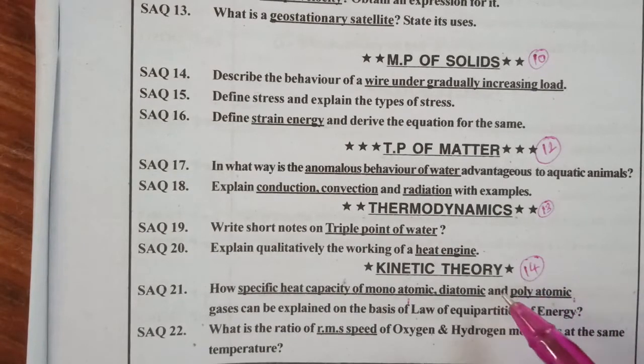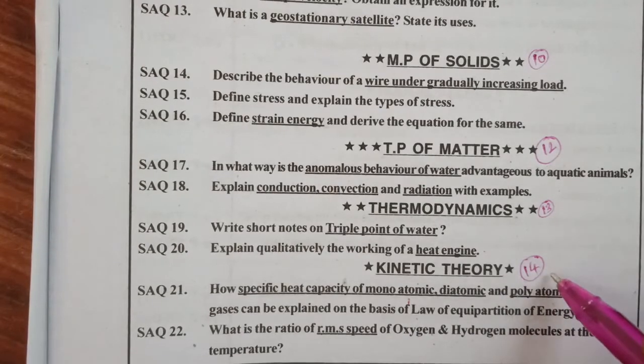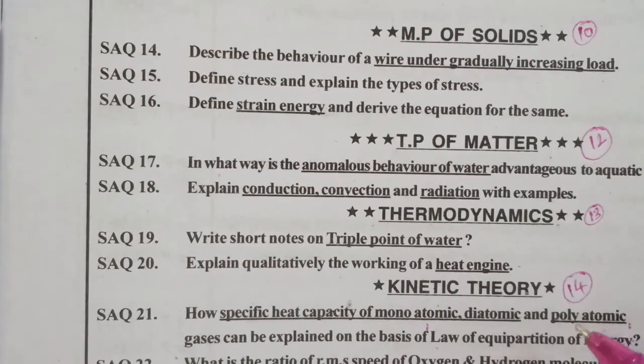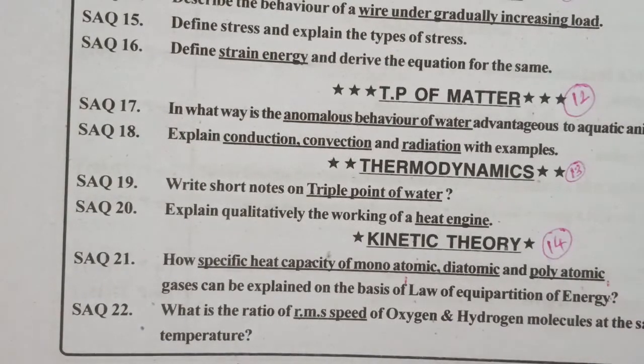Marks are decided by kinetic theory. Problems may come, 2 marks questions may come, 4 marks questions may come, 4 marks problems may come. This is all rounder and deciding chapter to get 60 out of 60. I hope you understand well. What is the ratio of RMS speed of oxygen and hydrogen molecules at the same temperature.